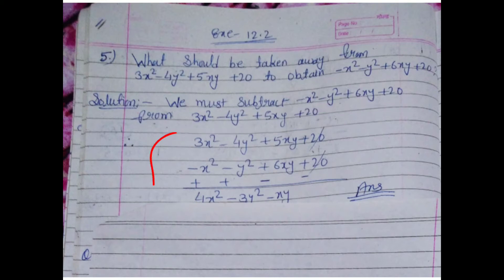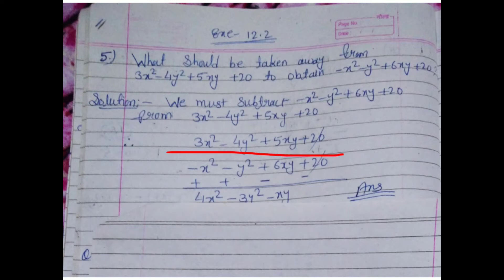So we must subtract the second equation from the first. Writing them horizontally and vertically: the first equation is 3x squared minus 4y squared plus 5x plus 20, and the second equation is minus x squared...